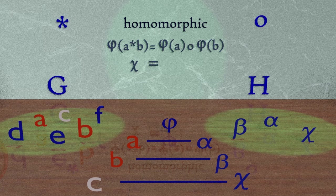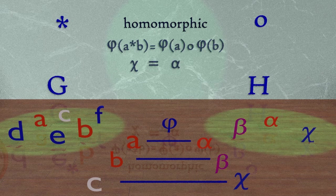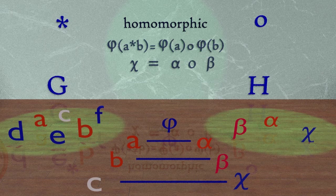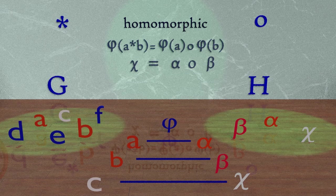On the right hand side, we see that phi of A maps to the element alpha, and that phi of B maps to the element beta. So for our structure of the two groups to be consistent, alpha circle beta must equal chi. And so when we have a homomorphism, we say that this preserves the group structure.